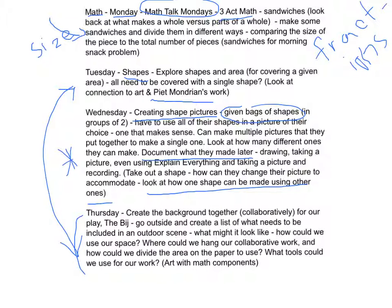On Thursday, I would like students to make the background for our play — go outside and create a list of what needs to be included in that outdoor scene. What might it look like? How could we use the physical space, where will we hang it, and what impact will that have? Dividing up the paper — what kinds of jobs will different people do, where are they going to put the work, what needs to be created, who might make the background, who might work on things that get cut out or painted on? We can also look at taping off the area of the floor and really making use of our given area.